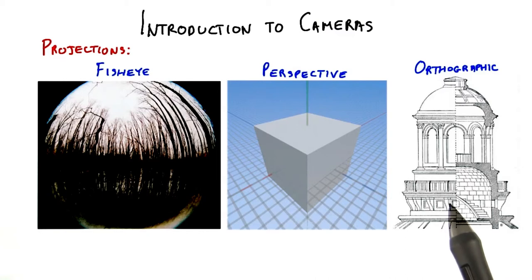An orthographic view is much more common in design software. Objects do not get smaller as they get more distant. Parallel lines in the real world stay parallel in this kind of view, as opposed to perspective where they do not.